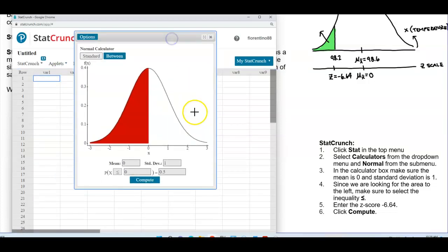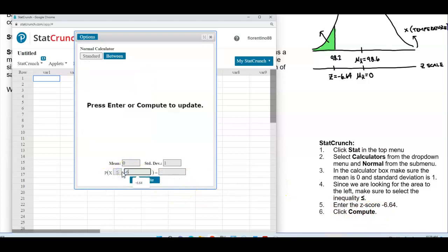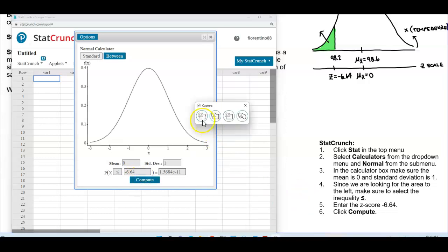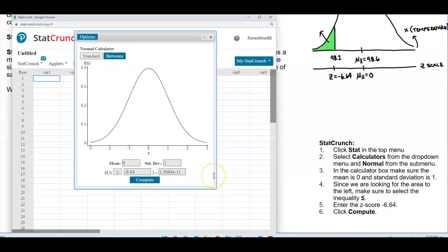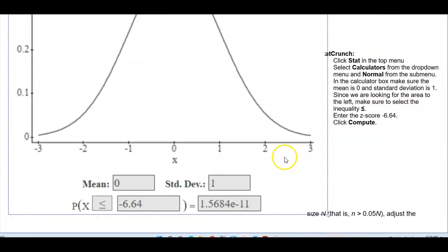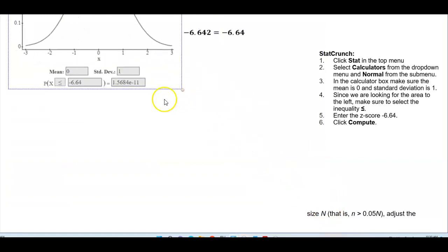Now, again, in the calculator box, we want to make sure that the mean is 0 and the standard deviation is 1 since we're inputting a Z score. We want to make sure that we're looking for the left. So we want to make sure that this inequality is pointing to the left. And then we're going to put in the Z score of negative 6.64. And then we're going to select Compute. So let's go ahead and do that. So we're going to copy this.